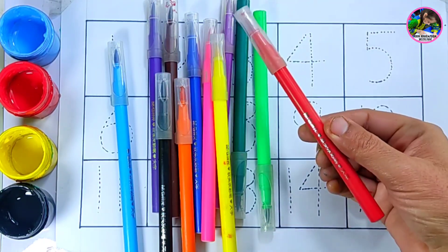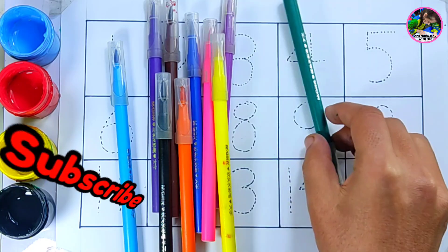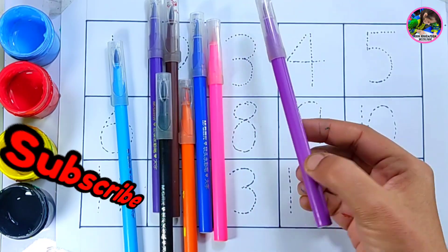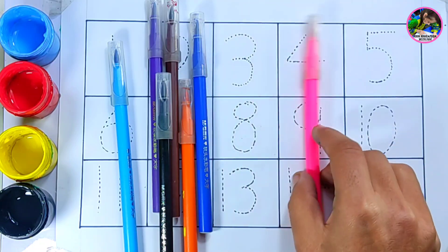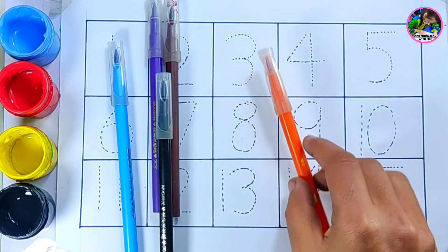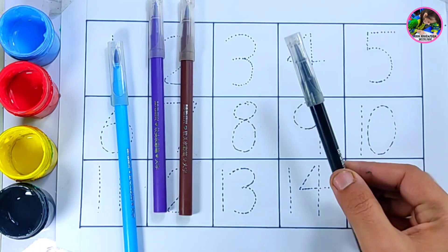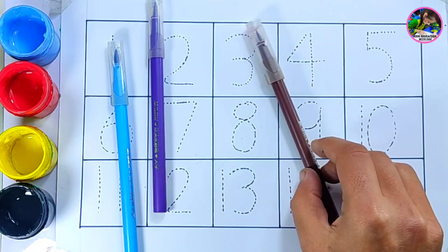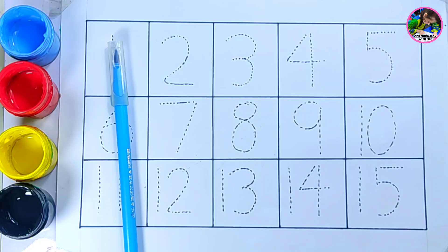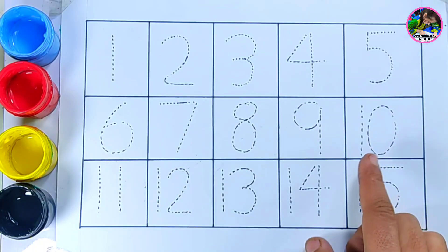These are our colors: red color, light green color, dark green color, yellow color, purple color, pink color, dark blue color, orange color, black color, brown color, violet color, sky blue color. Let's start tracing these numbers.